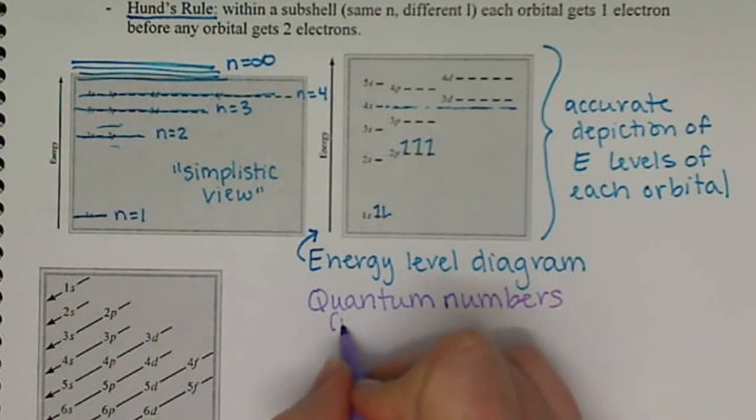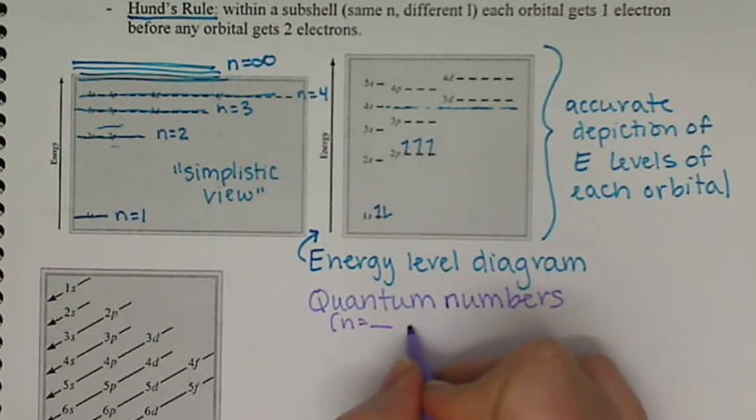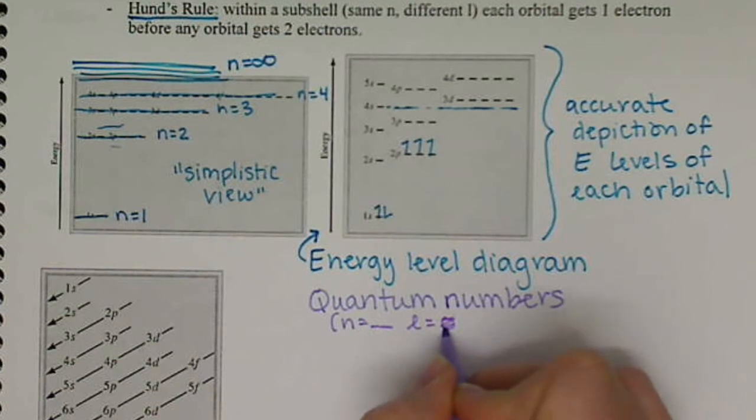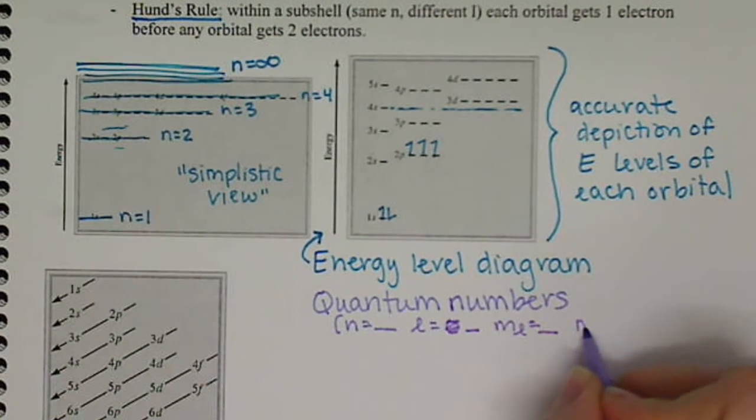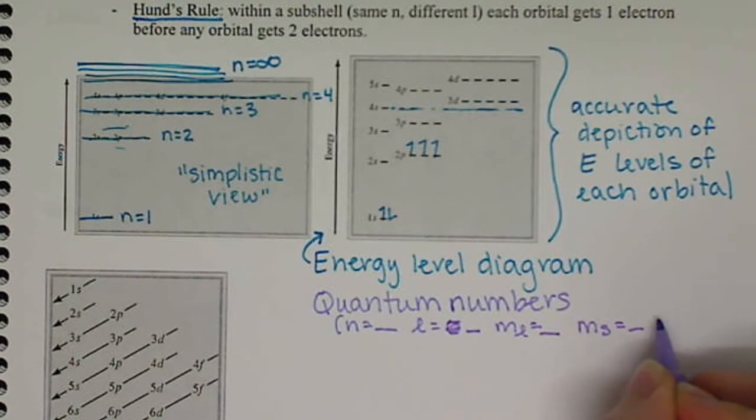So we have energy level diagrams. We also have quantum numbers. So that's going n equals such and such, l equals such and such, m sub l equals such and such, and m sub s equals such and such.